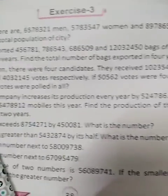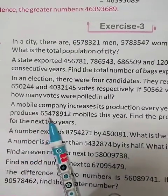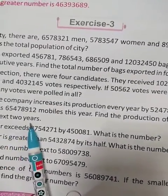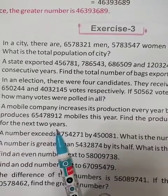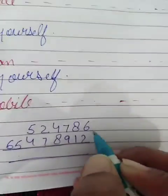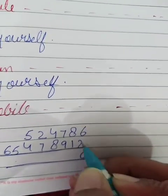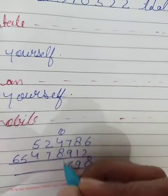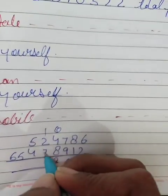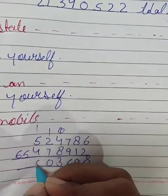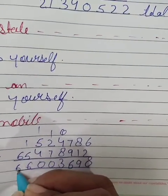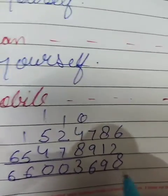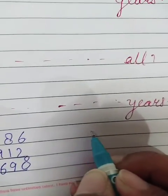Question number 4. A mobile company increases its production every year. The company produced 6,54,78,91,2 mobiles this year. Find the production of the company for the next two years. Friends, here: 6 and 2 is 8, 8 and 1 is 9, 9 and 7: 16, 8 and 4: 12, and 1: 13, 7 and 3: 10, 5 and 5: 10, 5 and 1: 6 and 6. The first year production is this, and second year production will follow.